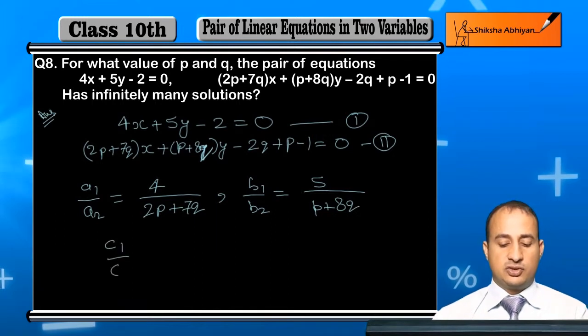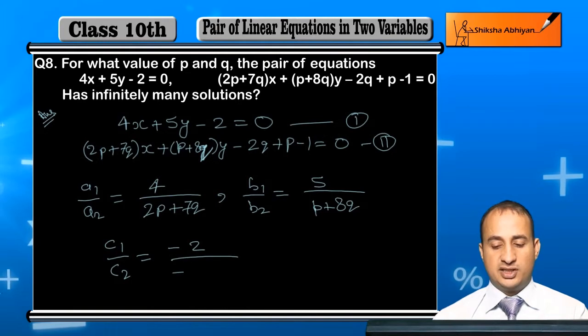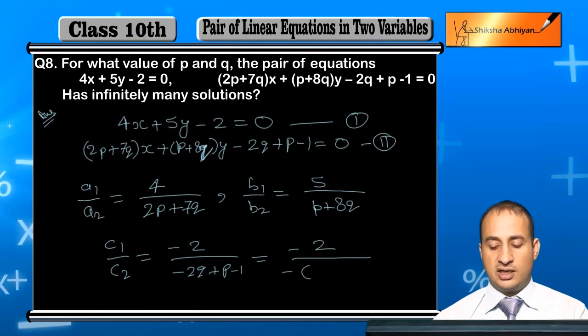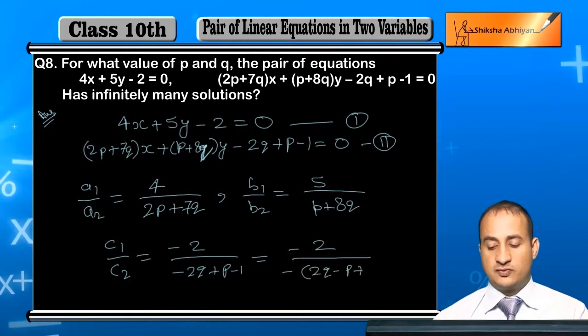Then c1 upon c2. This is minus 2 upon minus 2q plus p minus 1. If I take minus common below, this is 2q minus p plus 1.